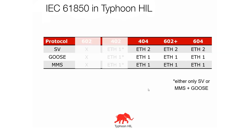For the three HIL devices — 404, 602+, and 604 — this restriction is resolved using two Ethernet ports. All of these devices have two Ethernet ports: the SV protocol runs through the Ethernet 2 connector, and GOOSE and MMS can run through the Ethernet 1 connector.